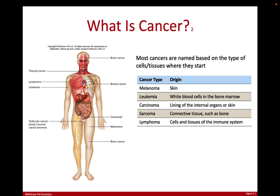Cancer is generally named based on where the problem starts. For example, melanoma starts in the skin. Leukemia starts in the white blood cells of the bone marrow — those are the ones dividing too much. Carcinoma cancers are in the linings of internal organs, like the liver lining, or in the skin. Sarcomas are in connective tissue like bones. And lymphomas are in cells and tissues of the immune system.